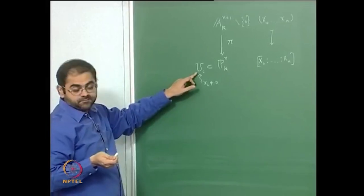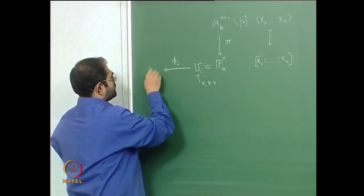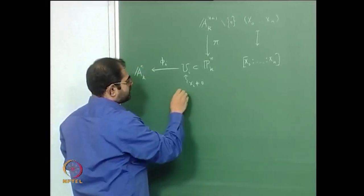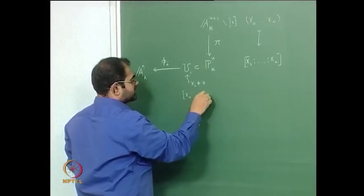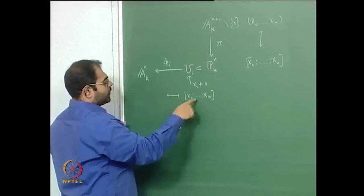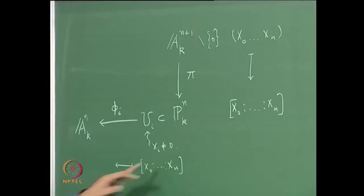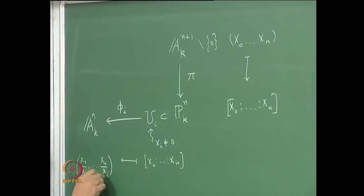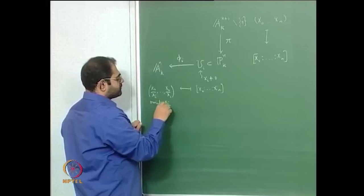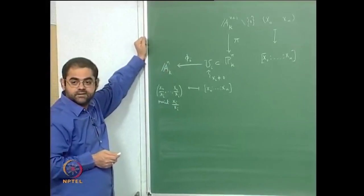It is an open set, and the point is that you have this map φ_i from U_i to A^n, n-dimensional affine space, which is gotten by sending a point with coordinates x_0, …, x_n to the following: you divide every coordinate by x_i, and at the entry x_i you get x_i/x_i = 1 which you forget. So you just send it to the point (x_0/x_i, …, x_n/x_i) omitting x_i/x_i. What we saw last time was that this φ_i is actually an isomorphism of varieties.